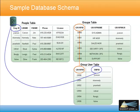The database schema used in this demo contains three tables: people, groups, and group user. There is a relationship between the people and group user table based on the employee ID, and there is a relationship between the groups and group user table based on the group ID.